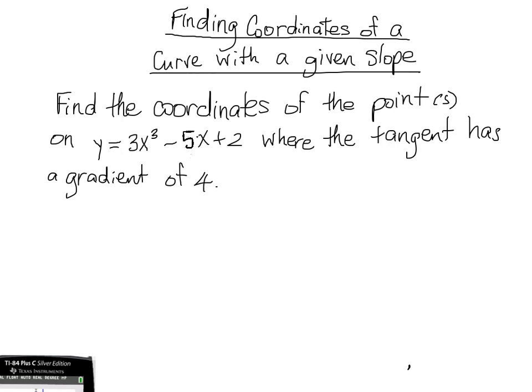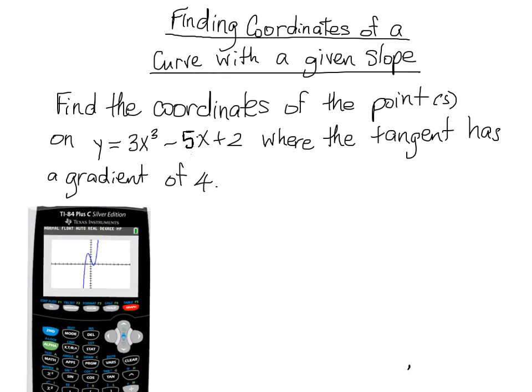So the first thing that I always like to do, and it's not a must, but it's good to be able to visualize. I like to draw my graph on the calculator so I can take a look at what it looks like. So now I have an idea of where the slope is positive. I can see that the slope is positive over here and the slope is positive over here, which means that perhaps the point with coordinates with a slope of 4 is somewhere up here, or maybe down here, or both.